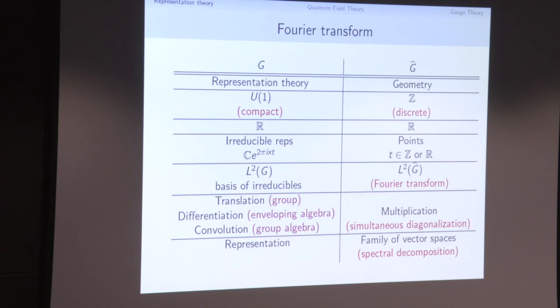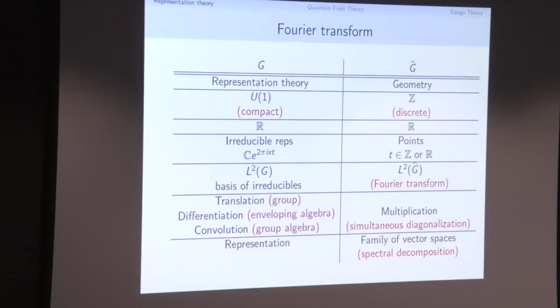Putting this all together, we get the Fourier transform. The general theme: I have a group G and its dual space G-hat, and I translate representation theory of G into geometry of G-hat. For example, the circle group U(1) has dual G-hat equal to the integers — a compact group with a discrete dual. The real line has unitary dual isomorphic to the real line again. The irreducible representations are just the one-dimensional exponentials — the characters e^{2πixt} — which form a basis for functions on G, giving a unitary isomorphism between L²(G) and L²(G-hat).